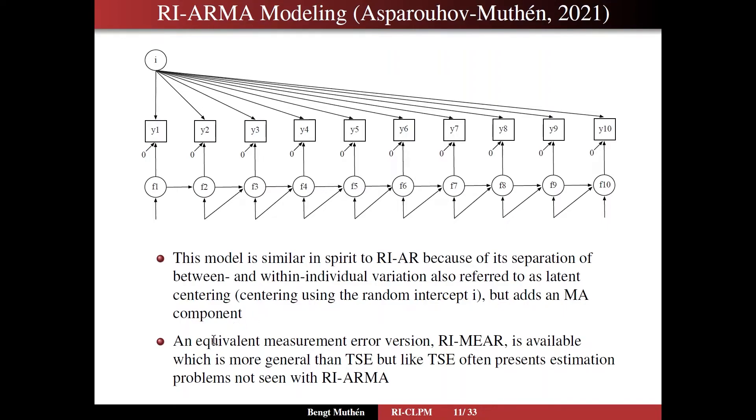And there is an equivalent measurement error version, just like it is for the RICLPM. And we call it RIMEAR, where ME stands for measurement error. That's actually a model that's more general than the TSE model, but just like TSE often presents estimation problems that you don't see with this RI-ARMA model. And we're going to try these models out in various applications.